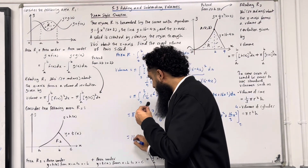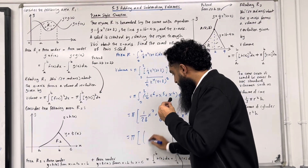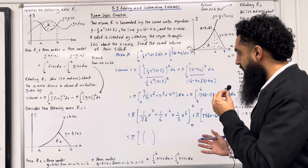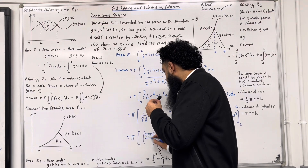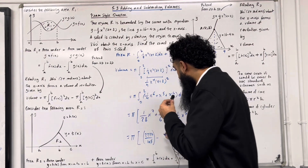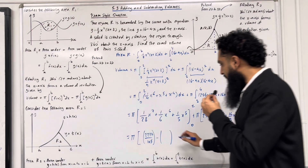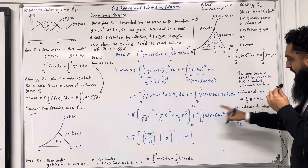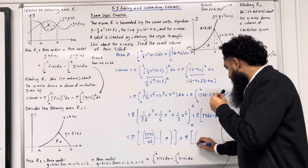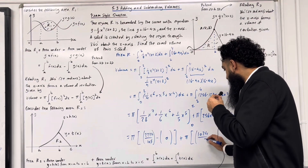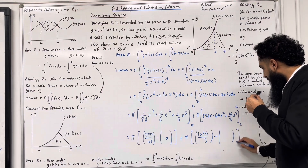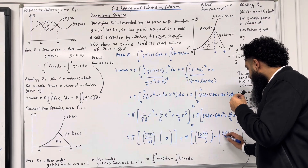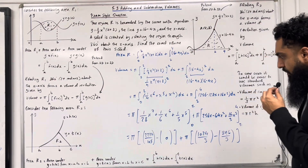Substituting x = 2 into the first expression gives 2272/105, and substituting x = 0 gives 0. For the second bracket, substituting x = 4 gives 1024/3, and substituting x = 2 gives 896/3.